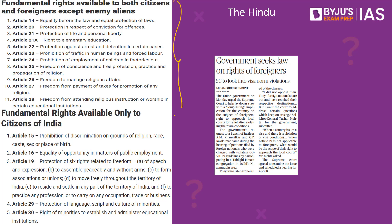Here is a list of fundamental rights available to both citizens and foreigners, except enemy aliens — and also the fundamental rights available only to citizens of India. Rights available to both include: right to equality, protection in respect of conviction for offences under Article 20, right to life and personal liberty under Article 21, right to elementary education under Article 21A, protection against arrest and detention under Article 22, prohibition of human trafficking and forced labour under Article 23, prohibition of child labour under Article 24, and fundamental rights related to religion under Articles 25, 26, 27, and 28.